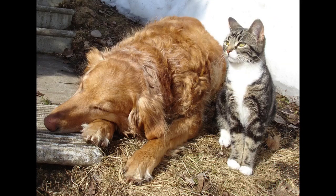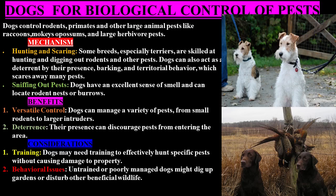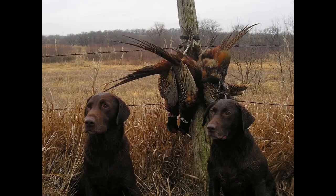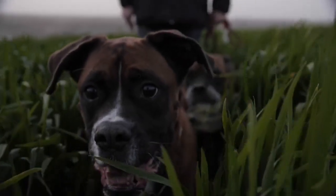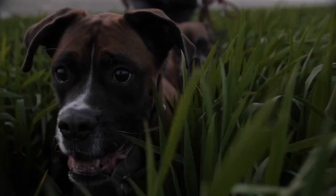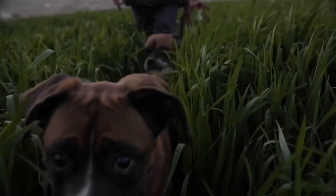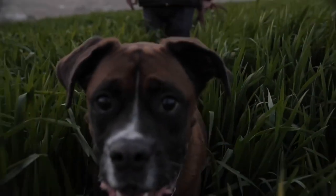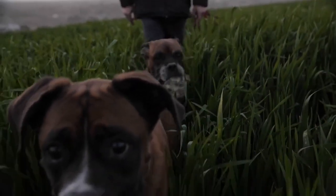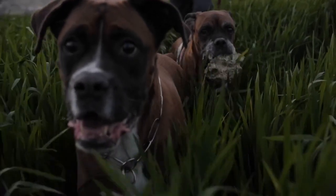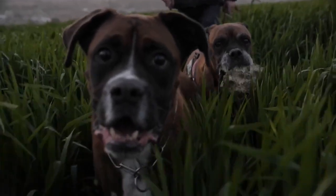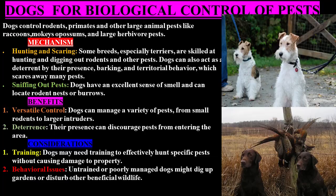Domestic dogs control rodents, primates, and other large animal pests like raccoons, opossums, and even deer. Dogs control pests by hunting and scaring. Some breeds, especially terriers, are skilled at hunting and digging out rodents and other pests. Dogs can also act as a deterrent by their presence, barking, and territorial behavior, which scares away many pests.